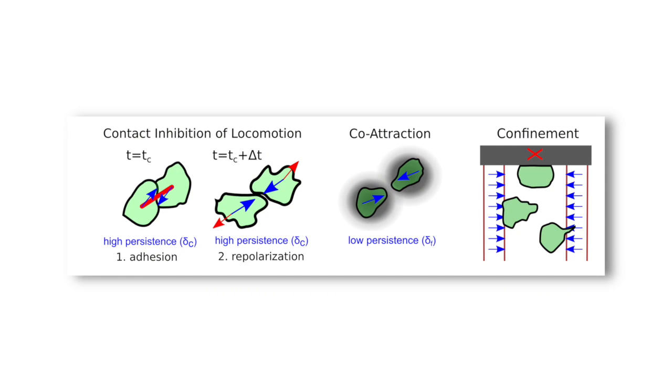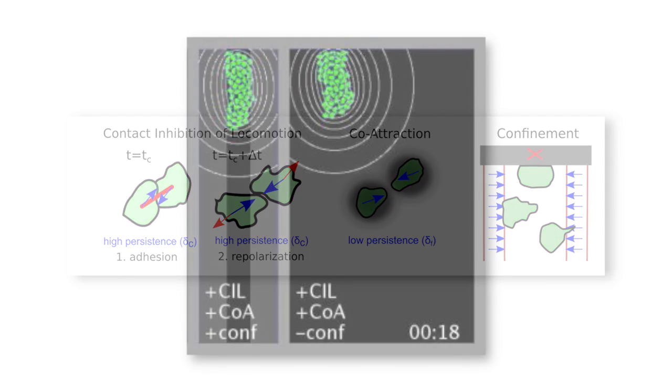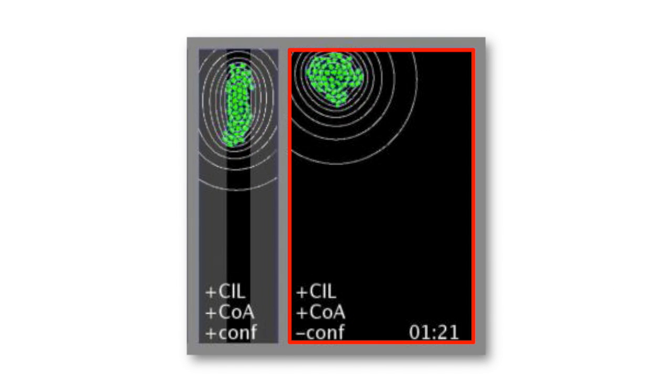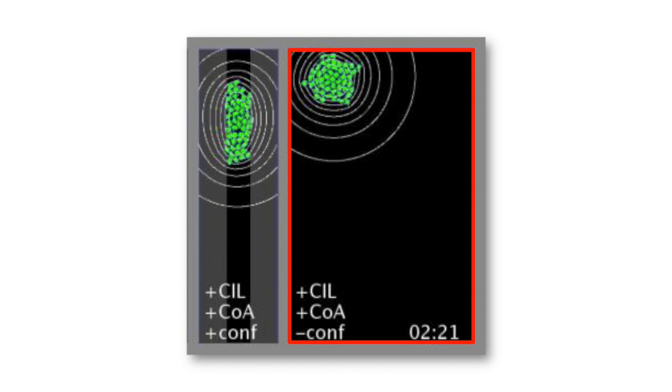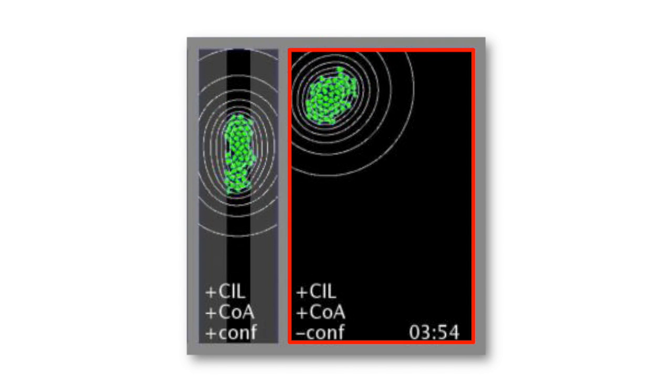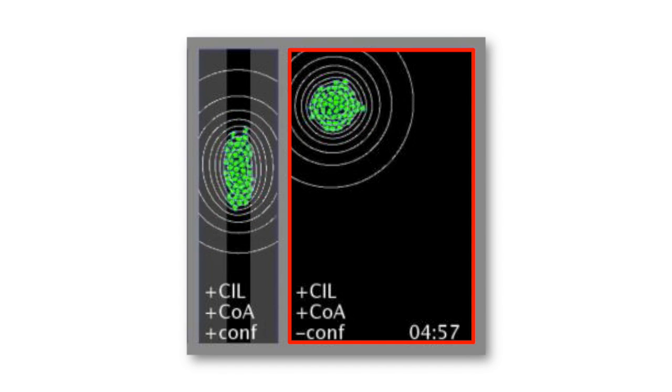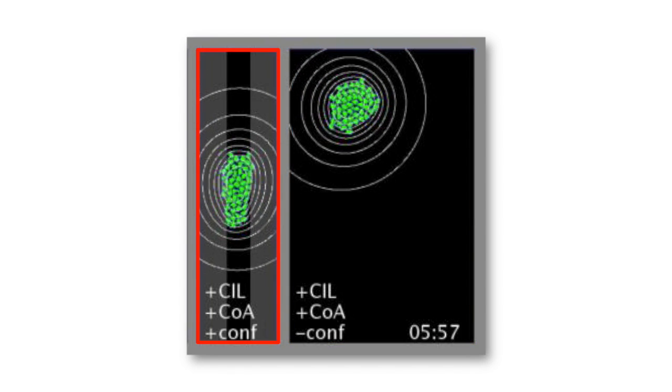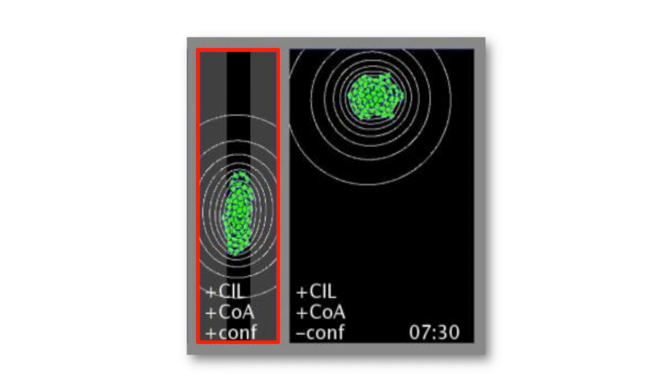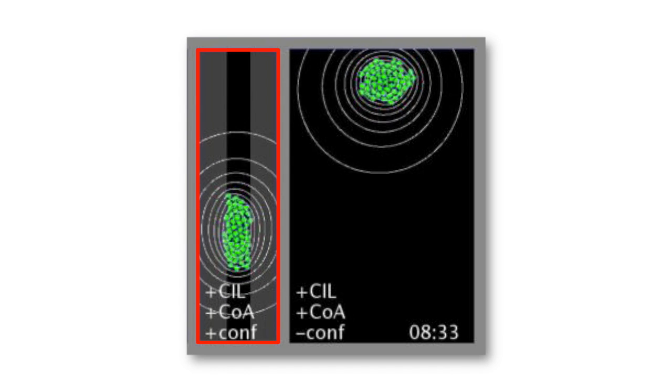So to test that, we decided to develop a mathematical modeling of neural crest migration where we put all the cellular activities that were already known to be involved in controlling neural crest migration. And in silico, when we removed the confinement, when we had a simulation that didn't have confinement, the neural crest still continued migrating, but not in a directional manner. So the confinement seemed to be required in silico for the directional migration of the neural crest cells.